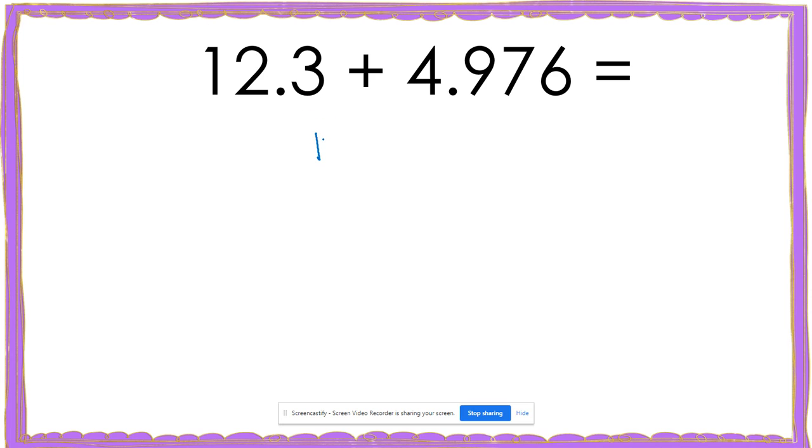For this, I'm going to start by lining up my decimals. So I have 12.3 plus 4.976. For this, I need to add a zero in two places. And then I can add like normal.